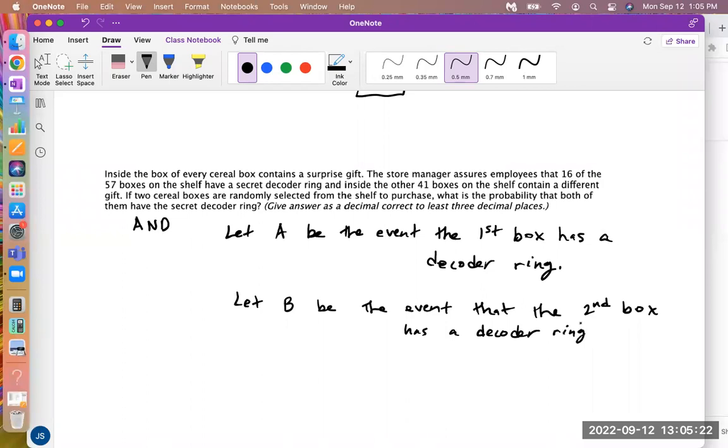Now they're not saying what is the probability of either the first box or the second box containing the ring, then that would be an OR problem. But this one is asking what's the probability of them both. Both have to have the decoder rings, right?